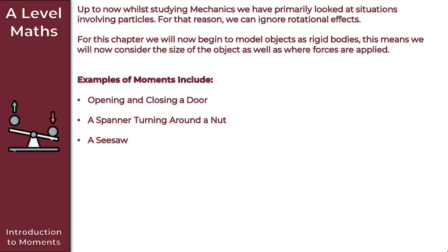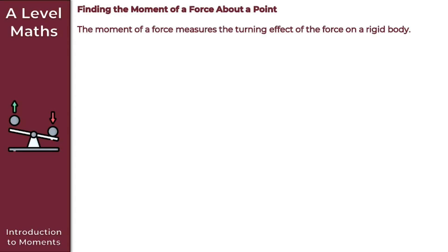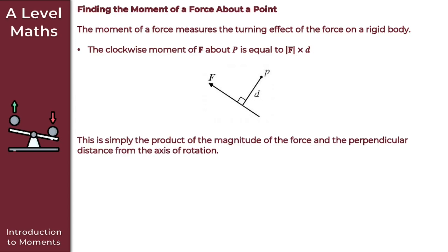Before we look at examples, let's discuss how we find the moment of a force. The moment of a force measures the turning effect of the force on a rigid body. The clockwise moment of force F about point P is equal to the magnitude of F times D, where D represents the perpendicular distance from the axis of rotation.